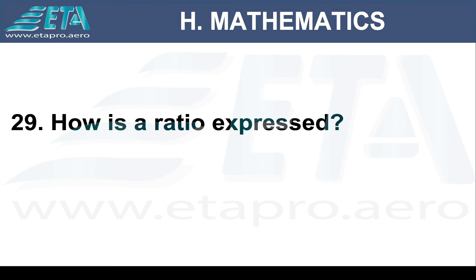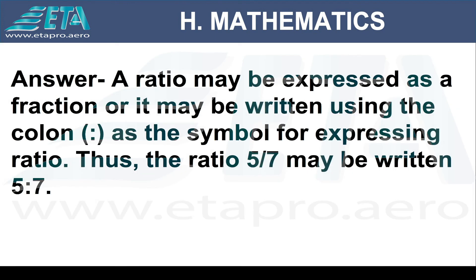How is a ratio expressed? A ratio may be expressed as a fraction, or it may be written using the colon as a symbol for expressing the ratio. Thus, the ratio of 5 over 7 may be written as 5:7.